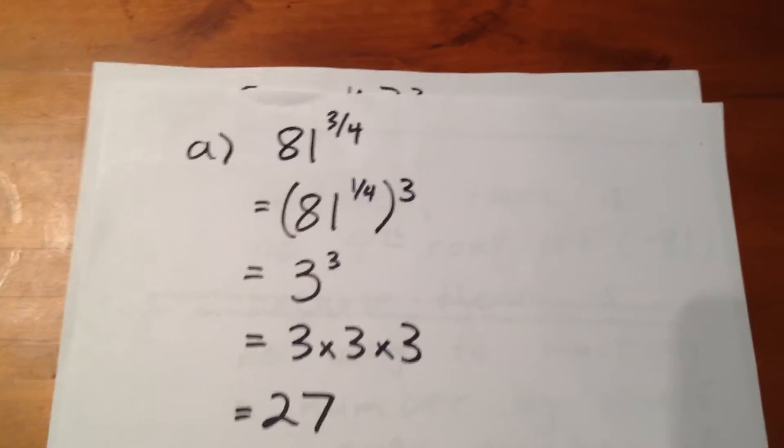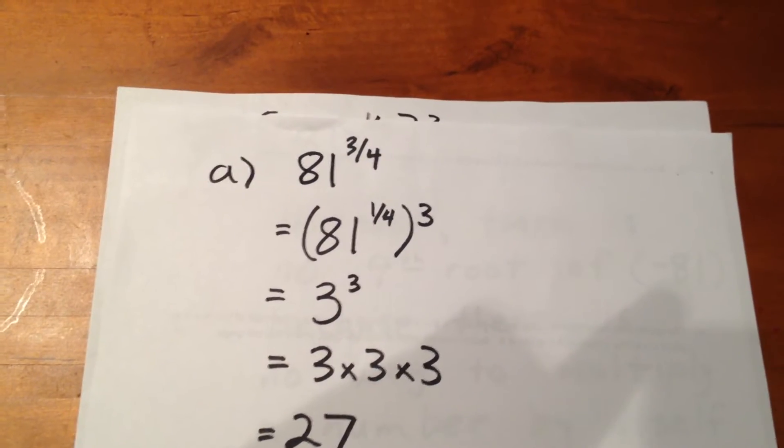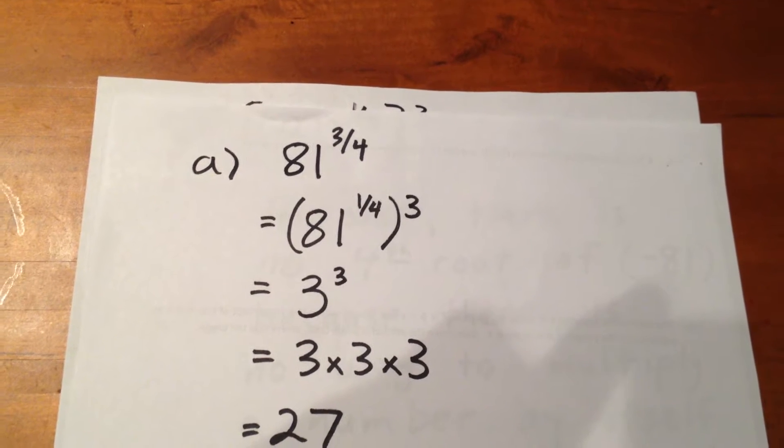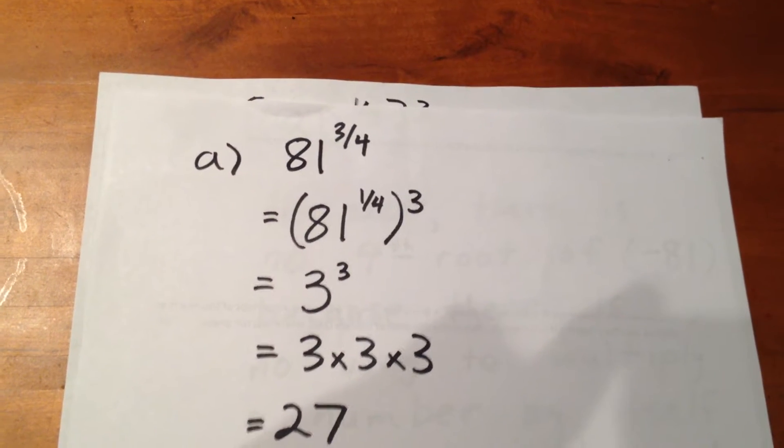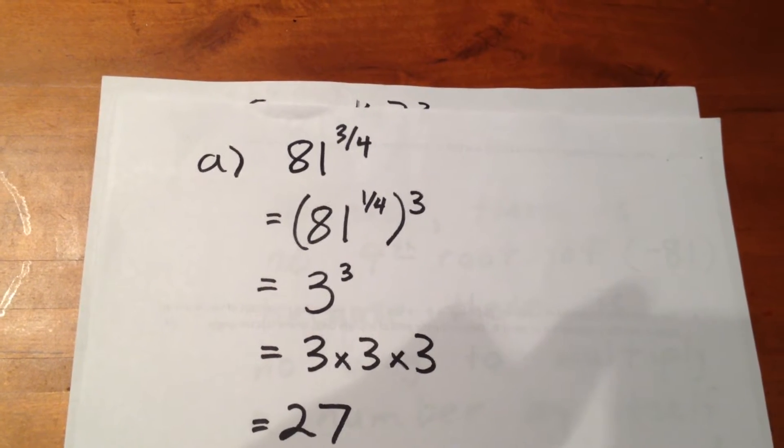In our first question here, we want to evaluate 81 to the exponent 3 quarters. The way we do this is to factor the exponent 3 quarters into 1 quarter times 3. We can then evaluate 81 to the exponent 1 quarter, which is 3.